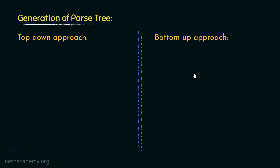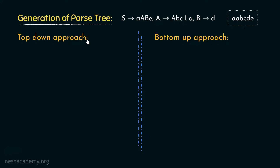In order to understand these approaches in a bit more detail, let's take an actual grammar and say we are to generate the string aabcde. Starting with the top-down approach, we begin from the start symbol S. S can be rewritten as small a followed by capital A, capital B, and small e. So from S, we derive small a, capital A, capital B, small e — covering the first a and the last e of the string.